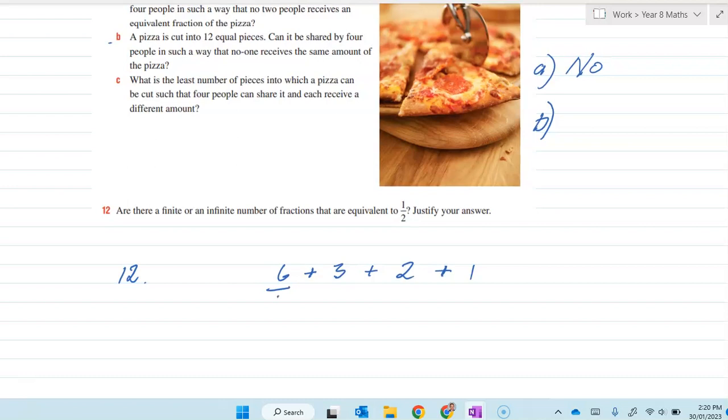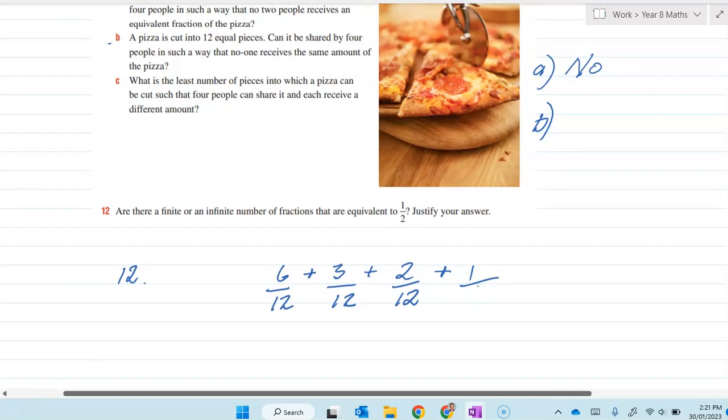Now, six twelfths is a half, three twelfths is a quarter, two twelfths is a sixth, and one twelfth is a twelfth. So yes, you can do it in part B.